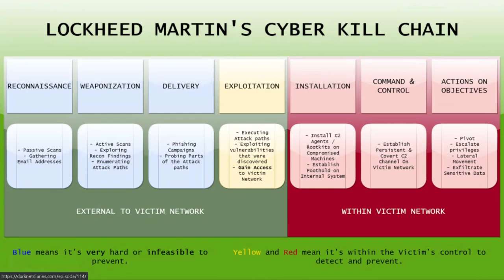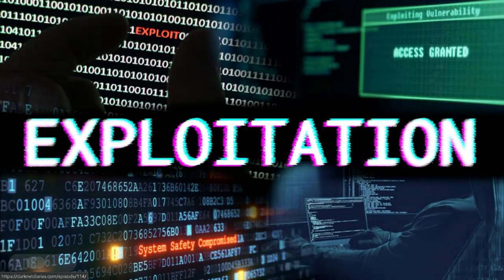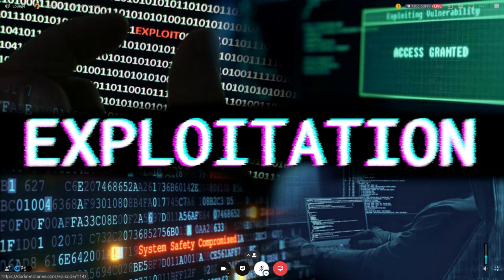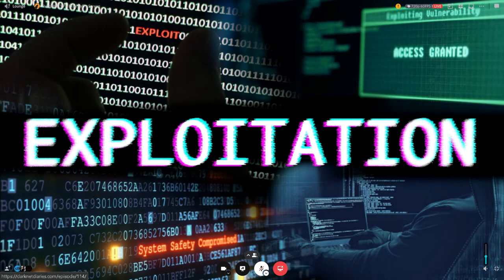Now we'll talk about exploitation, which is the fourth step in the Lockheed Martin Cyber Kill Chain. Strictly put, exploitation is code designed to execute and leverage a specific weakness on a target system. The goal is to gain administrative or root privileges. A broader definition includes exploiting human nature using social engineering to obtain sensitive information, but we'll focus on the technical discussion — how malicious actors can leverage a specific weakness on a target system.